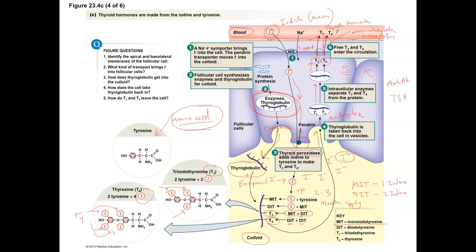Once the thyroid hormone is in the bloodstream, it's going to attach to something called thyroid binding globulin — TBG. That's a transport protein in the blood that grabs onto T3 and T4 and moves them to the target cells. T3 is the active version of thyroid hormone, so any T4 that enters the cells will have an iodine removed to become T3. Then these interact with receptors inside the cell, affect gene expression, and you'll have transcription and translation take place within the target cells to affect metabolism.